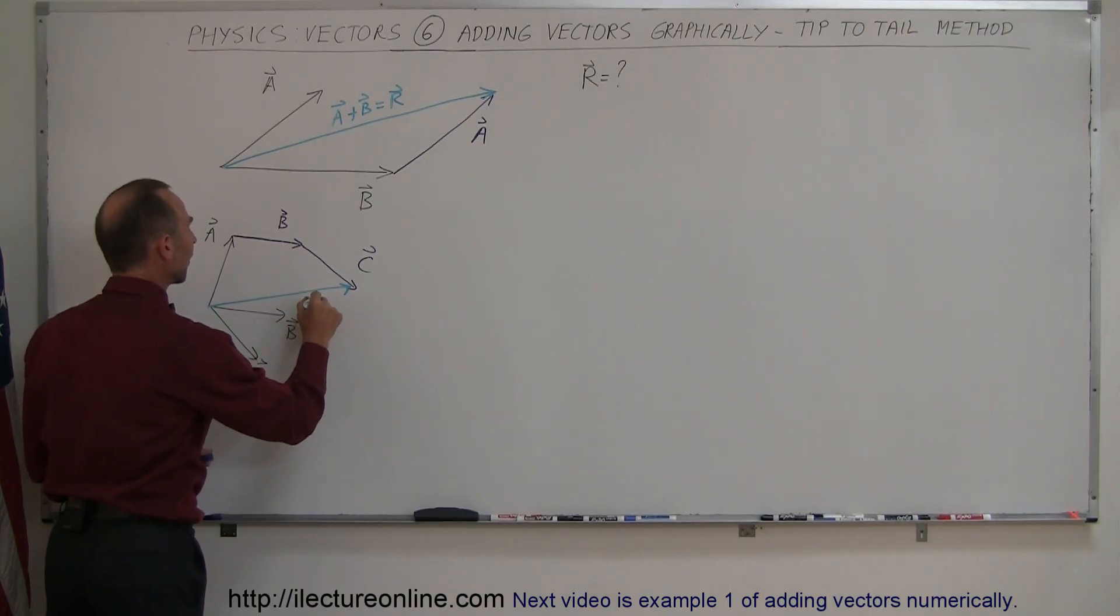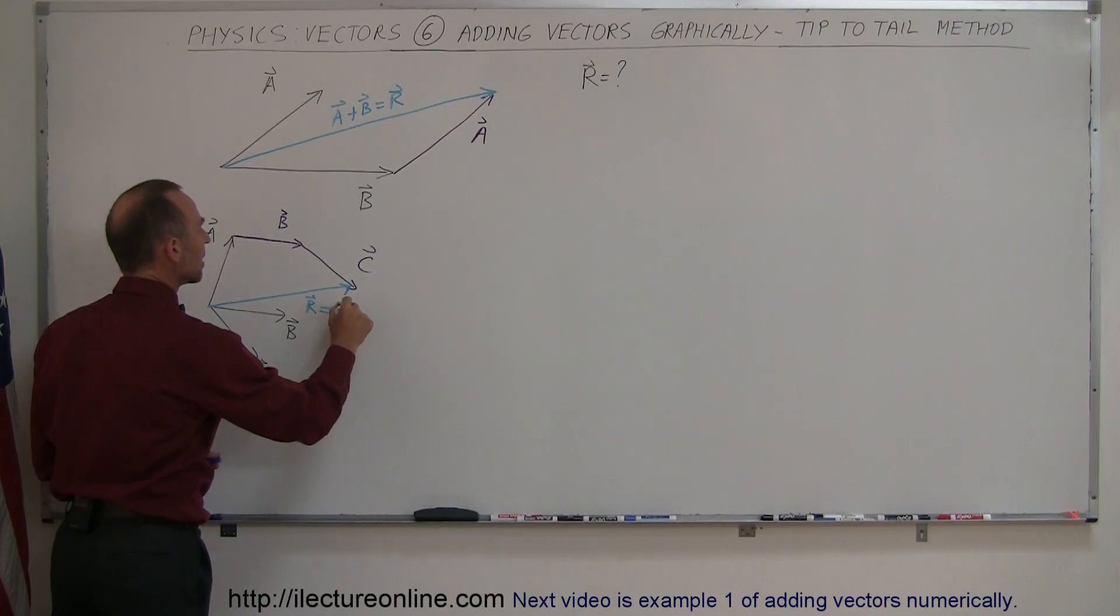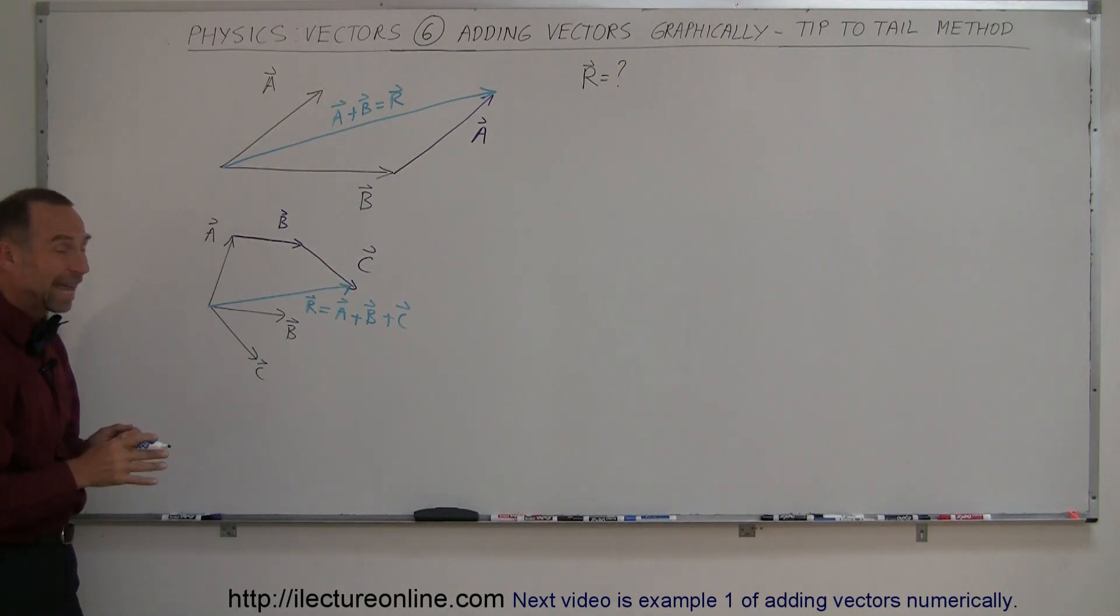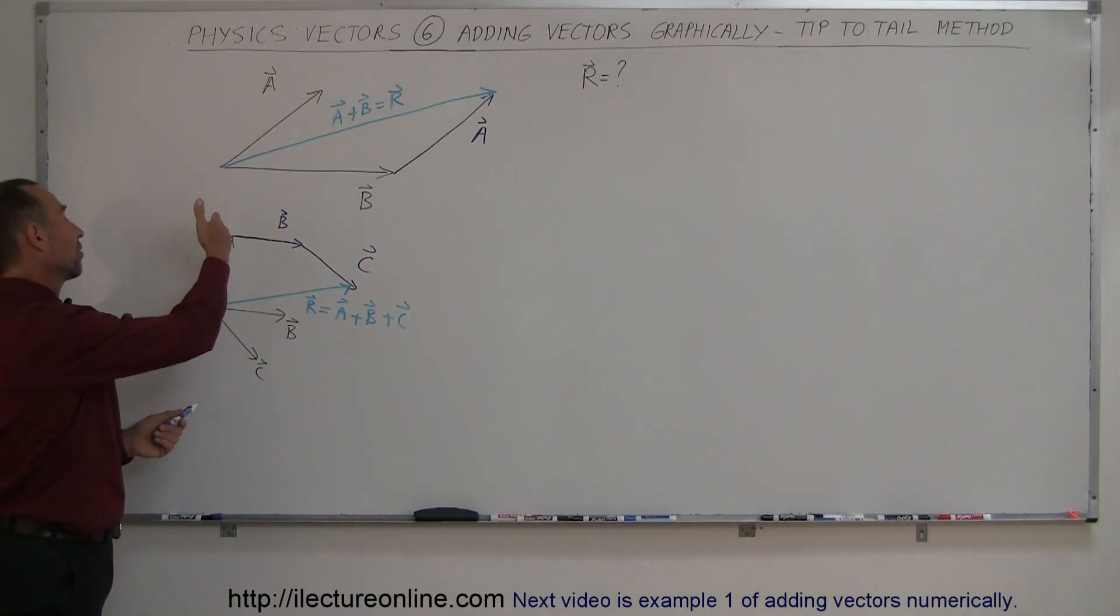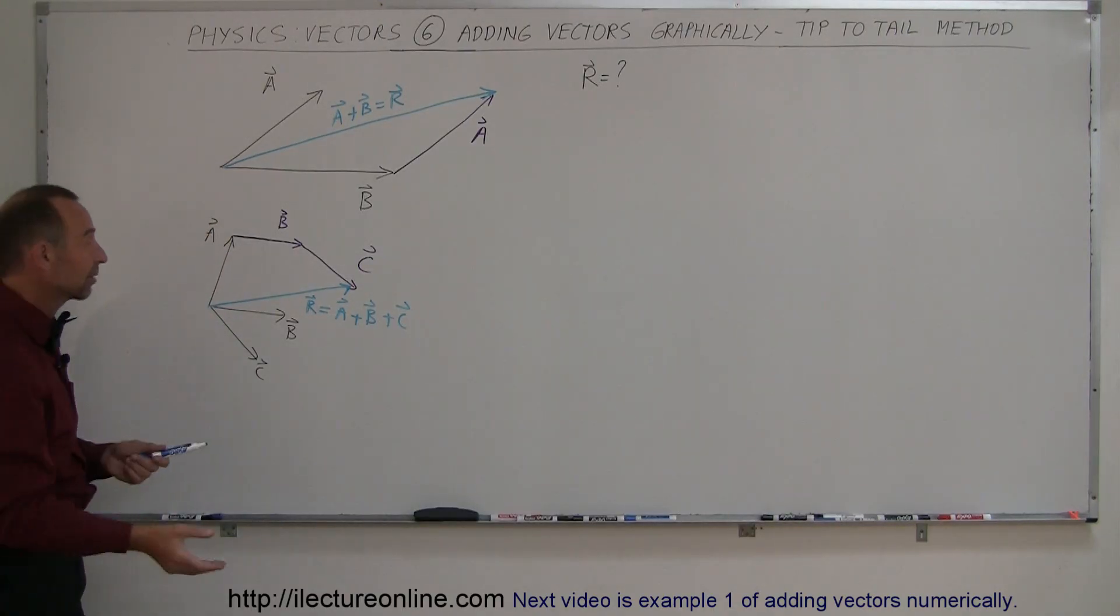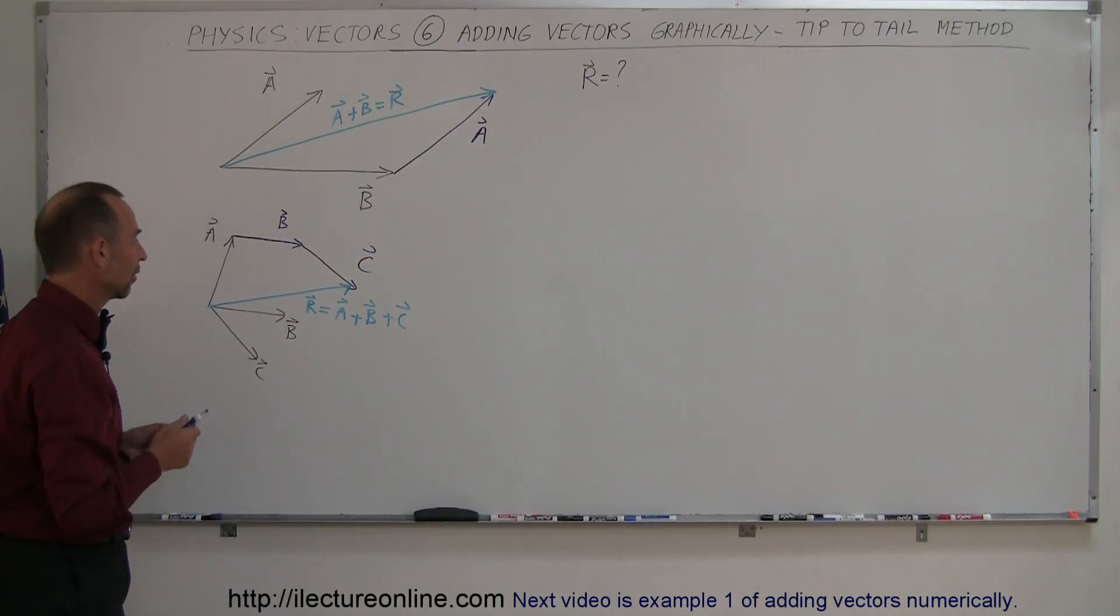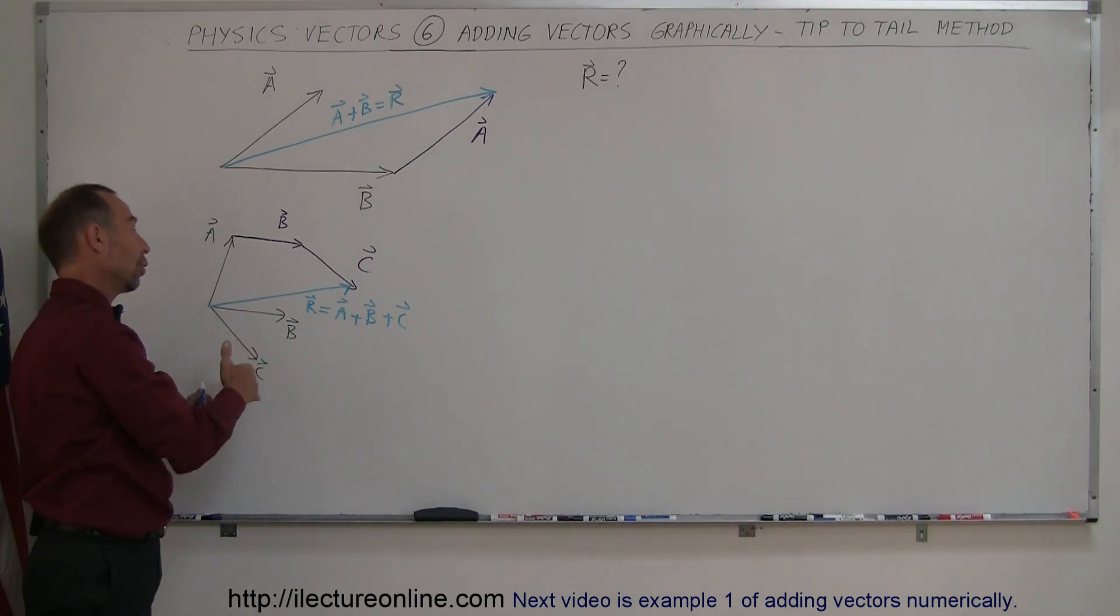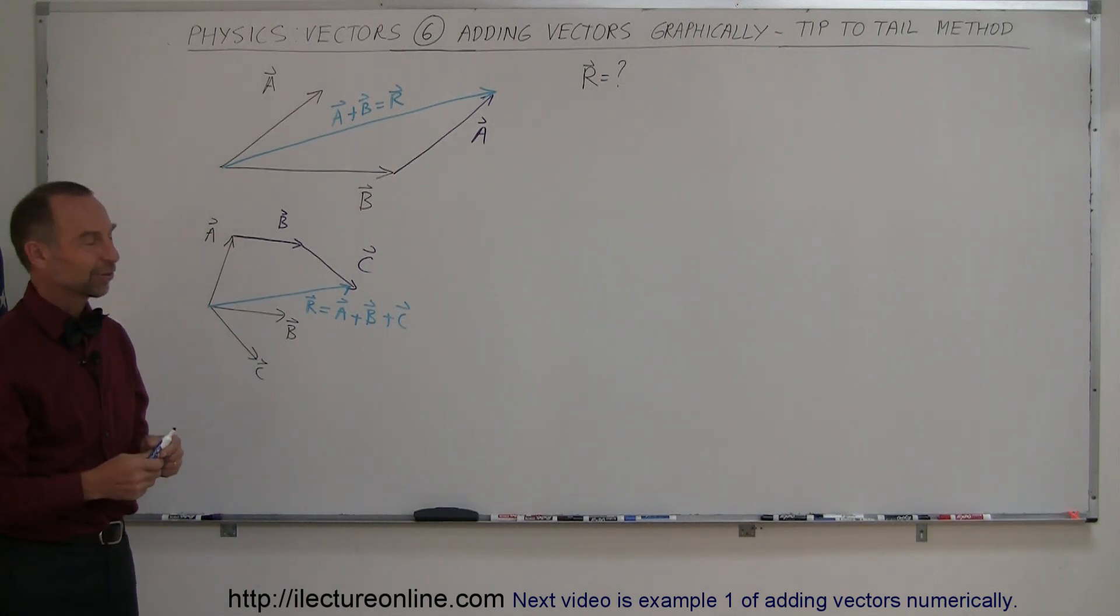And this is my resultant vector which is simply the sum of vector A plus vector B plus vector C. So notice that tip to tail method is a pretty handy method especially if I have more than two vectors. Simply keep moving them around. Move the tail of the second vector to the tip of the first. The tail of the third vector to the tip of the second. The tail of the fourth vector to the tip of the third and so forth. And that's how you graphically add vectors together. As long as you don't change the direction or the magnitude of any of the vectors.